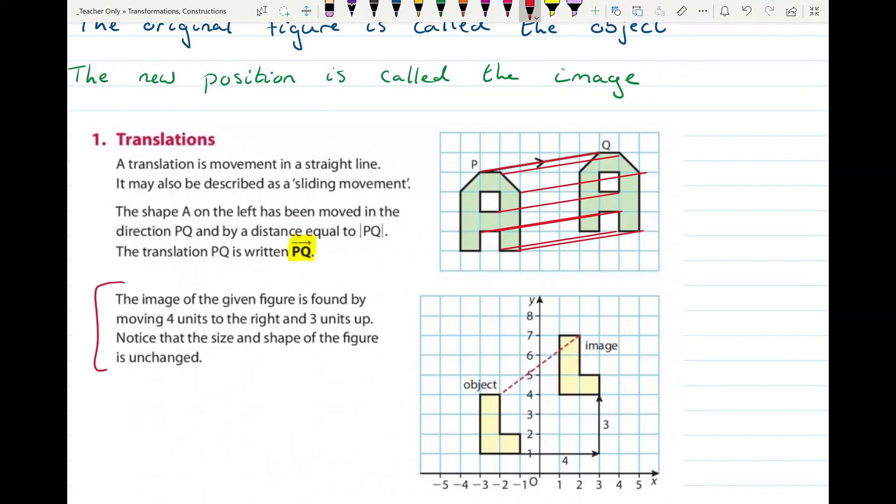Reading down here, the image of the given figure is found by moving four units to the right and three units up. Notice that the size and shape of the figure is unchanged. So one way of describing the translation will be here as previously with PQ. Or another way would be saying, OK, you take every point and you come out four and you go up three and that will find its image.